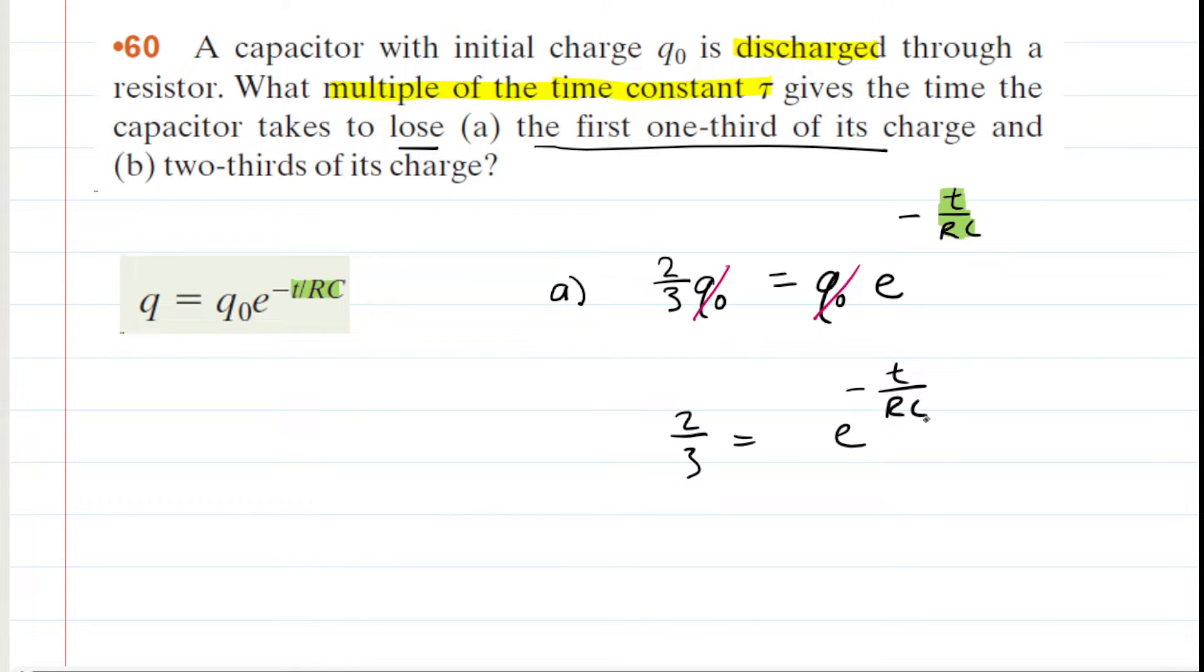To isolate the exponential term, we're going to take the natural log of both sides. What that does is it brings the exponent down into the front of the natural log. So you now have negative t over RC multiplied by the natural log of e. But the natural log of e is just 1, so you have the fraction times 1, which is just the fraction.